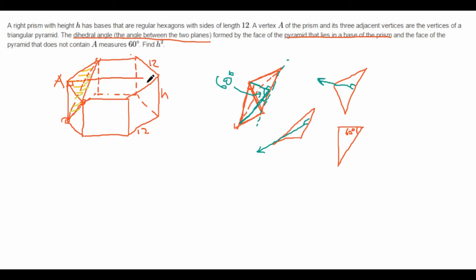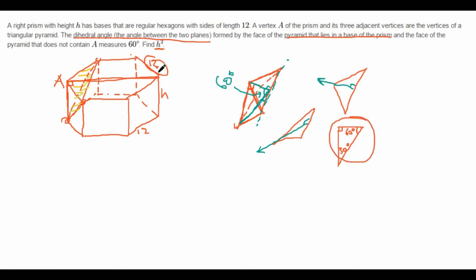So now we know that this is 90 degrees, which is pretty nice, because it tells us that this is 30 degrees. And what does that tell us? This is a special triangle — a 30-60-90 triangle. So now we know the ratios of the side lengths. That's good, because what we want is a side length, which is H. And we have another side length. So now all we need to do is somehow use this triangle to relate 12 and H, so we can find H squared.